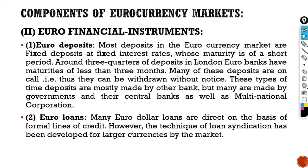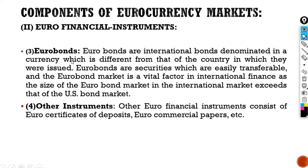The second instrument is the Euro loan. Many Euro dollar loans are direct on the basis of formal lines of credit. However, the technique of loan syndication has been developed for larger amounts in the market. The next financial instrument is Euro bonds. Euro bonds are international bonds denominated in a currency different from that of the country in which they were issued. Euro bonds are easily transferable securities and the Euro bond market is a vital factor in international finance, as its size exceeds that of the US bond market. Lastly, other Euro financial instruments include Euro certificates of deposits and Euro commercial papers.